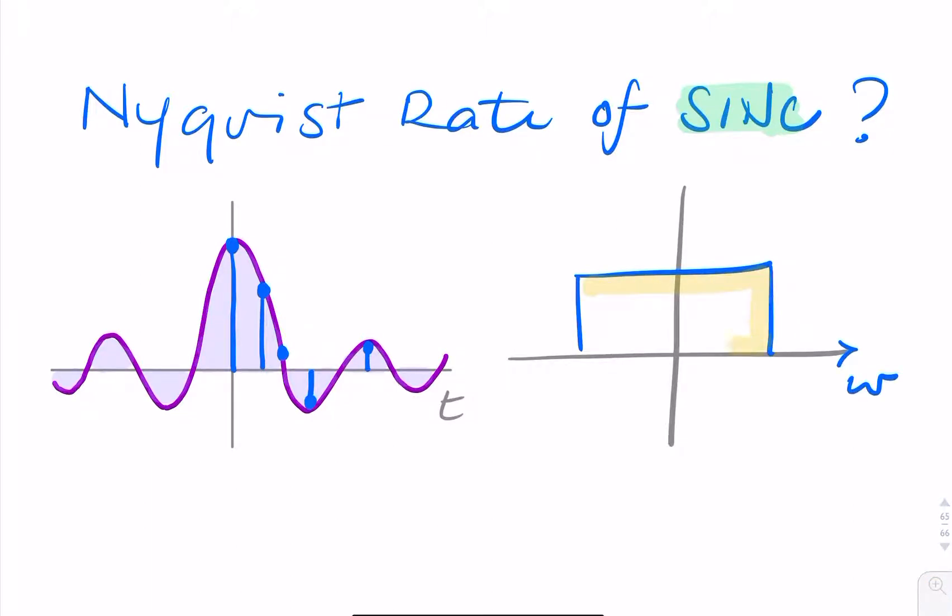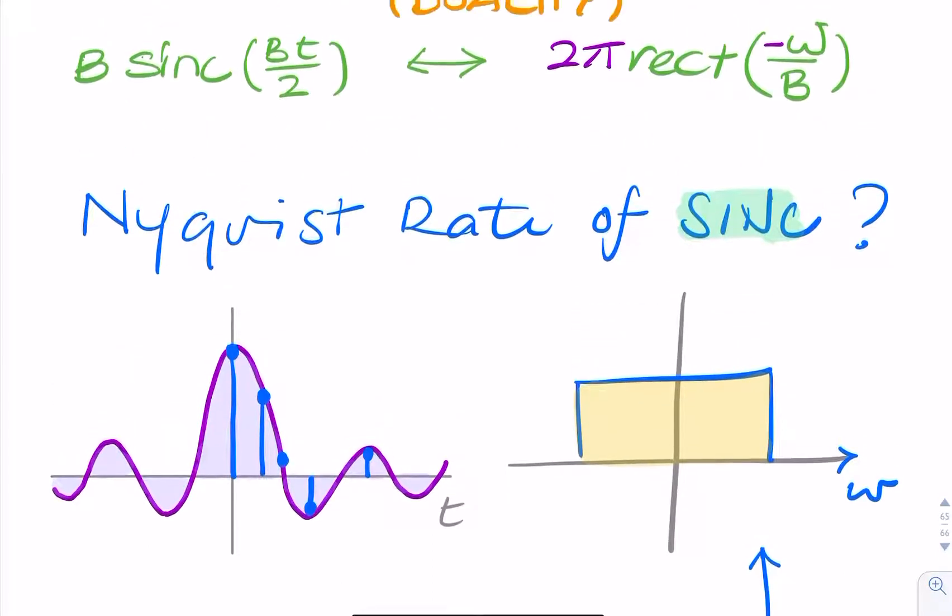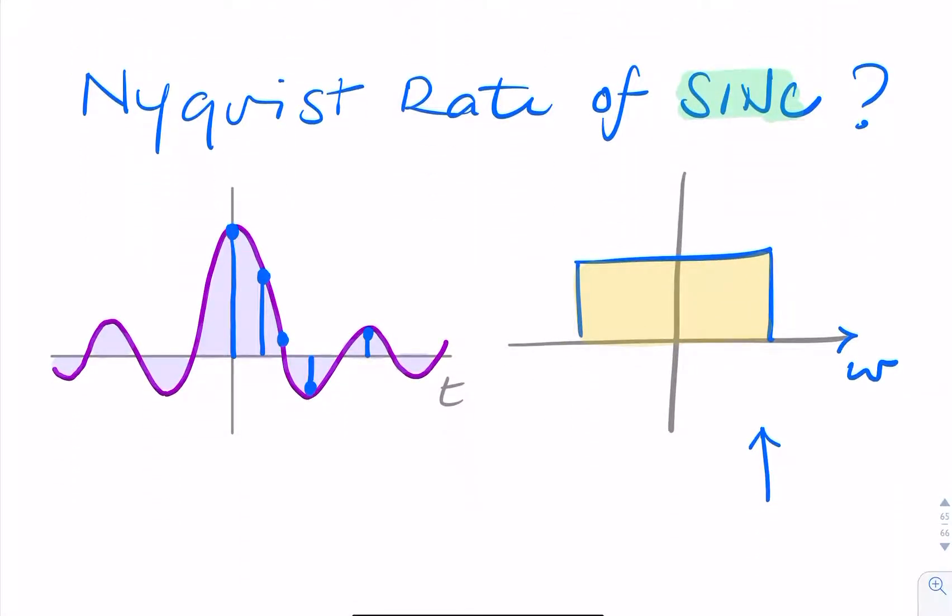So it's a rectangular function. The important thing we need to find now is the bandwidth. So what's this value here? To find that, we look at this here: omega over B, uppercase B. So this would be B over 2, and this would be minus B over 2.